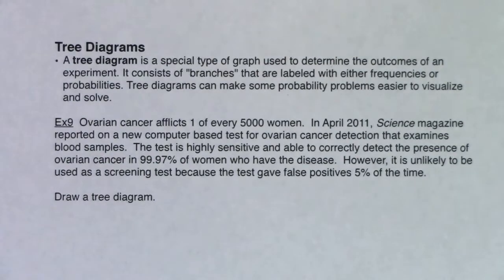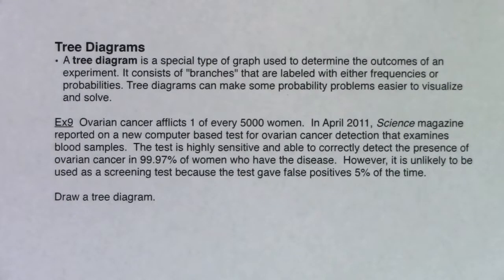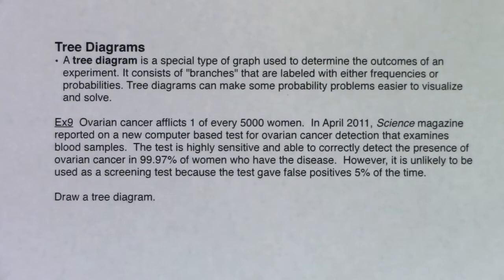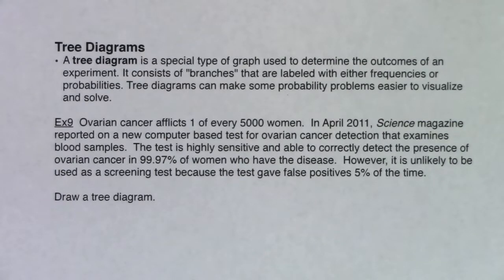A tree diagram is a special type of graph used to determine the outcomes of an experiment. It consists of branches that are labeled either with frequencies or probabilities. Tree diagrams can make some probability problems easier to visualize and solve. You don't always need to make one, but if a problem can be represented with a tree diagram, I usually make it just because it helps me visualize it.